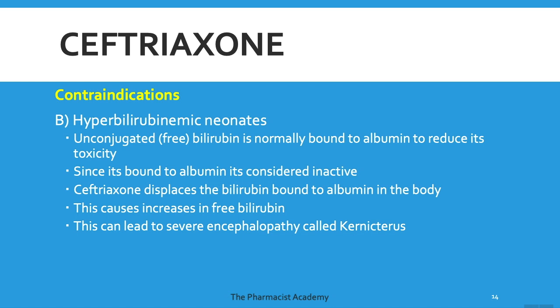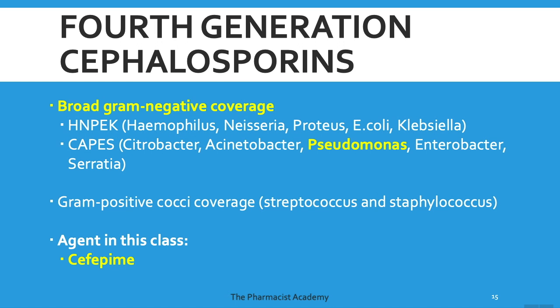The fourth-generation cephalosporins have broad gram-negative coverage. Not only do they cover HNPEC microorganisms, they also cover SPACE organisms, including Pseudomonas — you must know that this fourth-generation cephalosporin covers Pseudomonas. They have some gram-positive cocci coverage, but from the third generation onward, the gram-positive coverage is not going to be that impressive. The only agent in this class is cefepime.